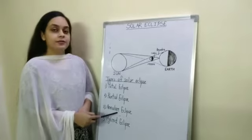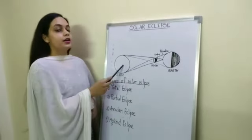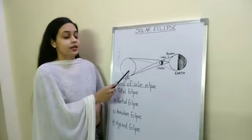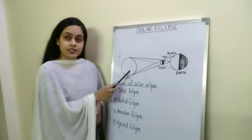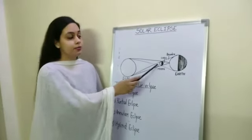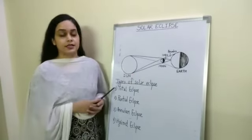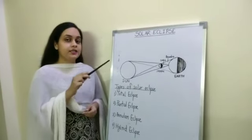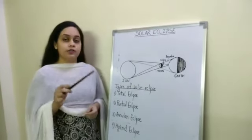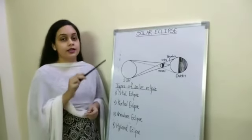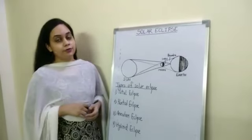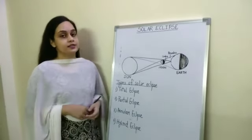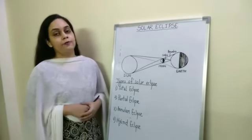An annular eclipse occurs when the moon comes completely in front of the sun, but in this type of eclipse the moon appears to be smaller than the sun. So the light of the sun can be seen at the edges of the moon, and an annulus or ring is formed around the moon, which is also known as the Ring of Fire.